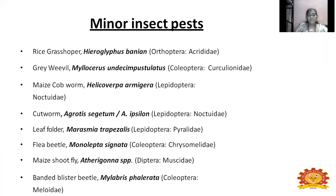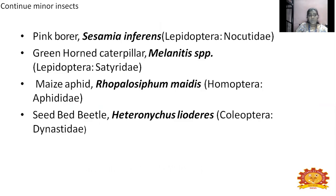Some minor insect pests include: rice grasshopper, grey weevil, maize cobworm, cutworm, leaf folders, flea beetle, maize shootfly, banded blister beetle, pink borer, green horned caterpillar, maize aphid, and seed borer beetle. These are the minor pests of maize, and these pests are also pests of sorghum too. One by one, the pests will be explained — their life cycle, damage caused to maize crop, and how they can be managed.